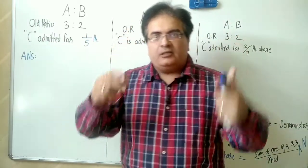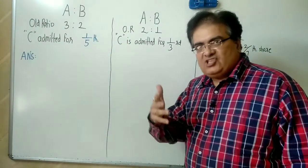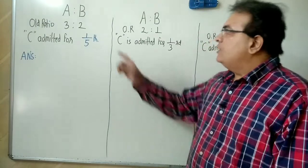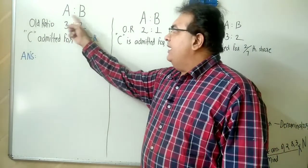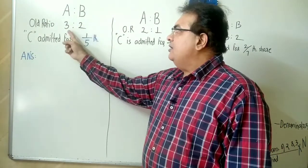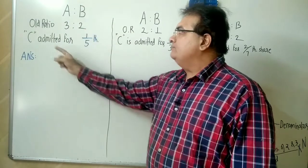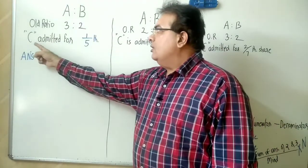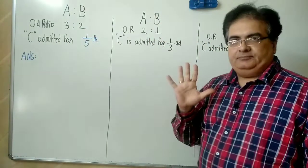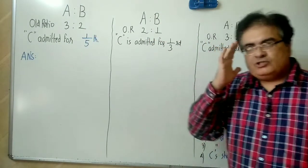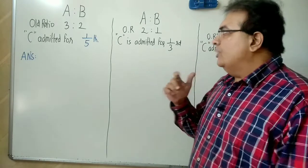Suppose the data is: A and B are in ratio 3:2, and C is admitted for one-fifth share. Now how do we find only the new ratio?